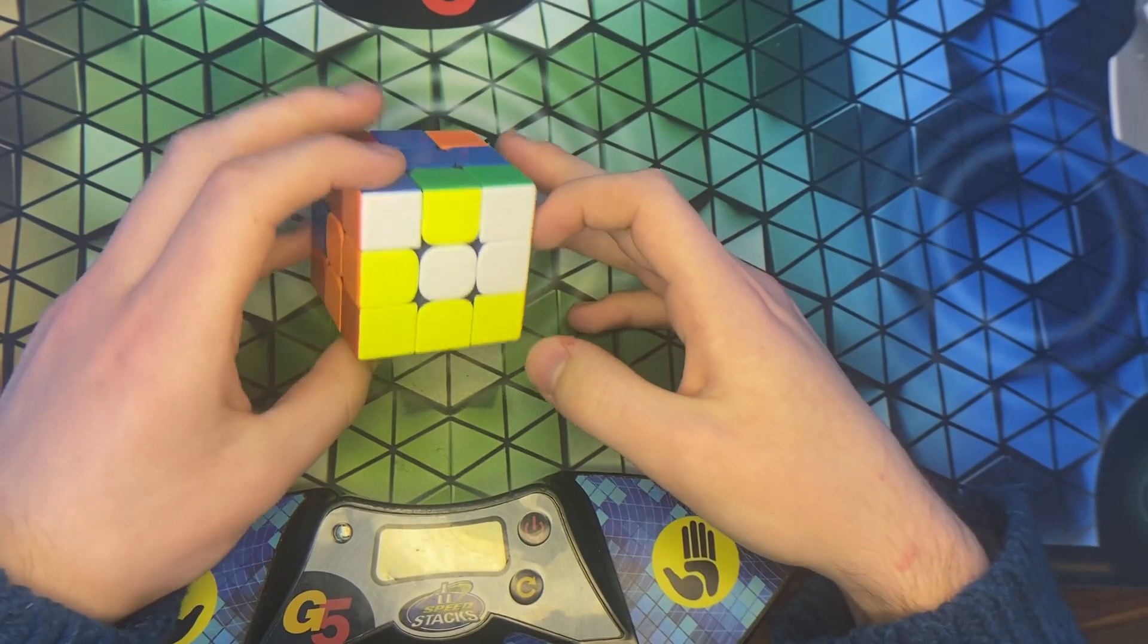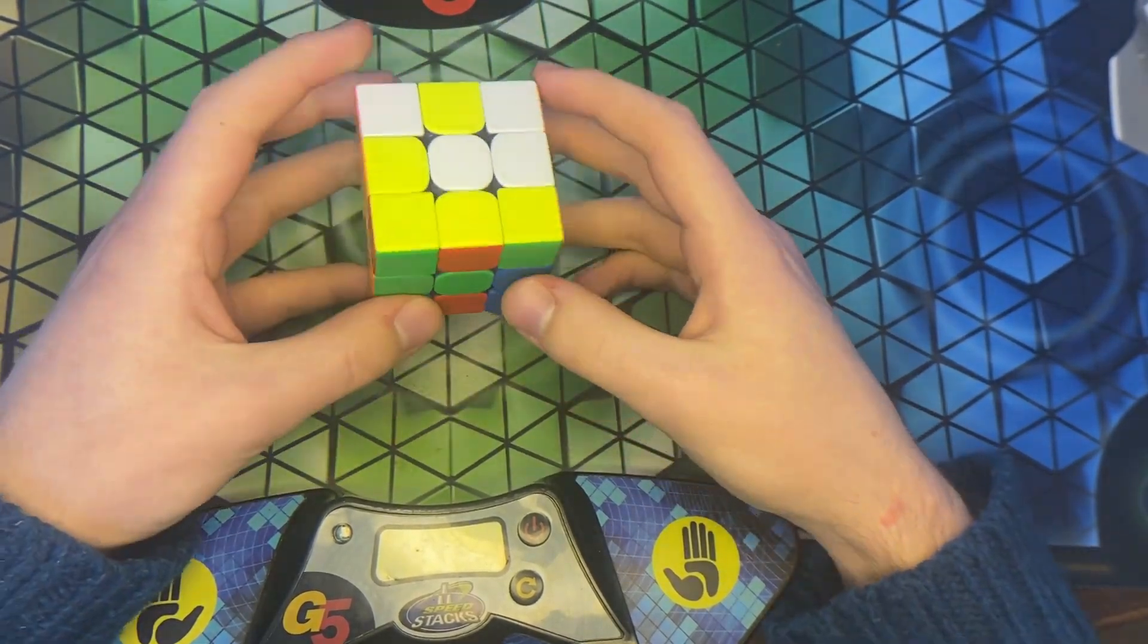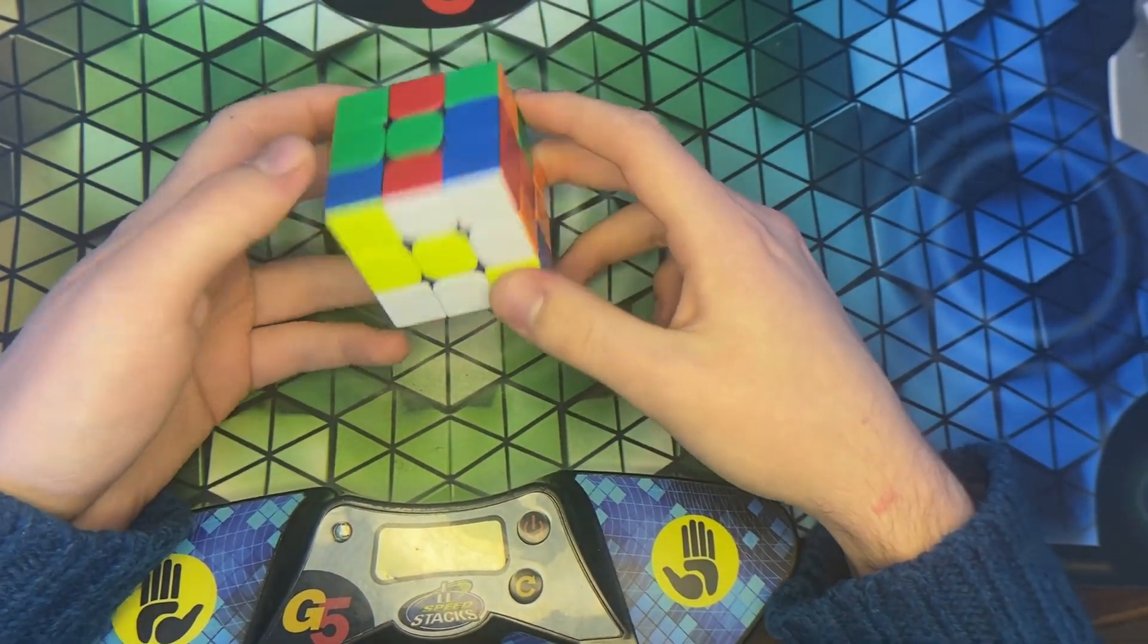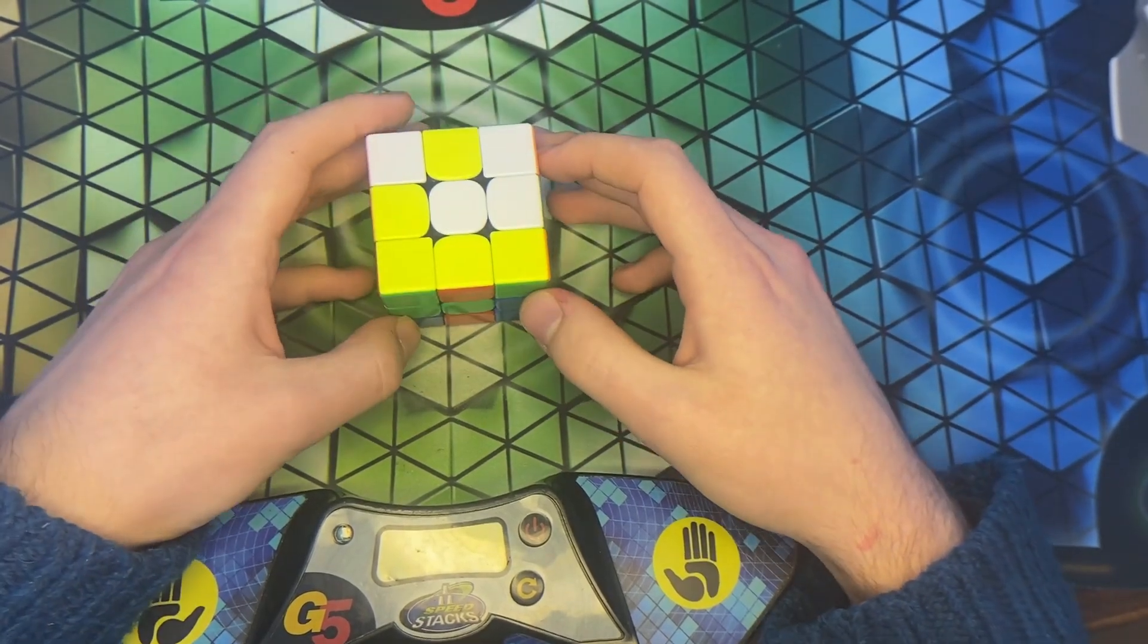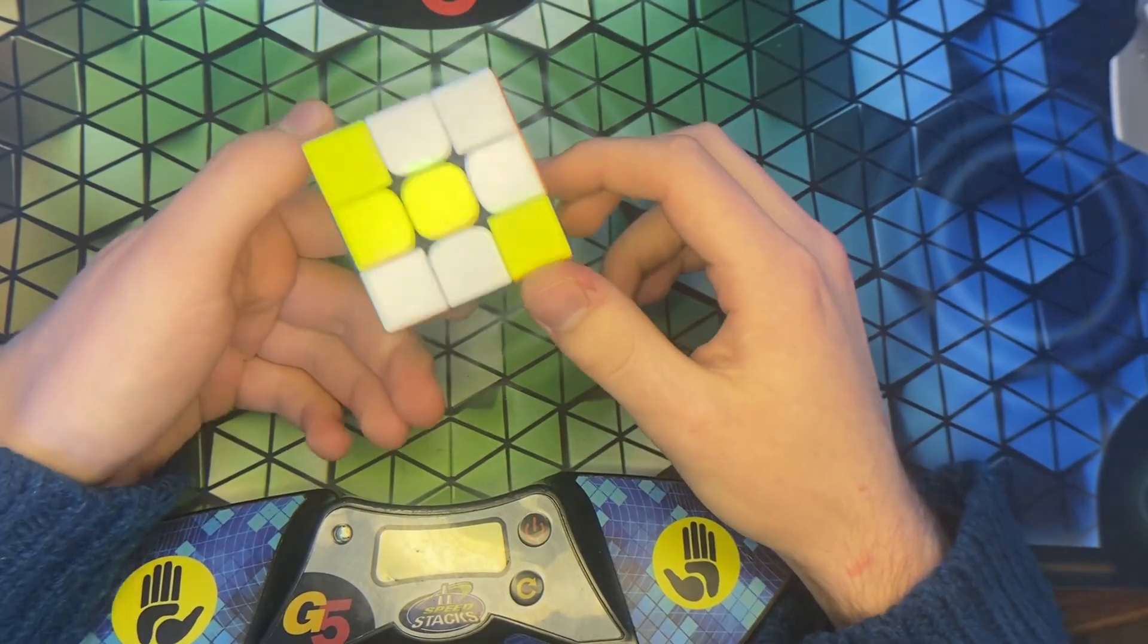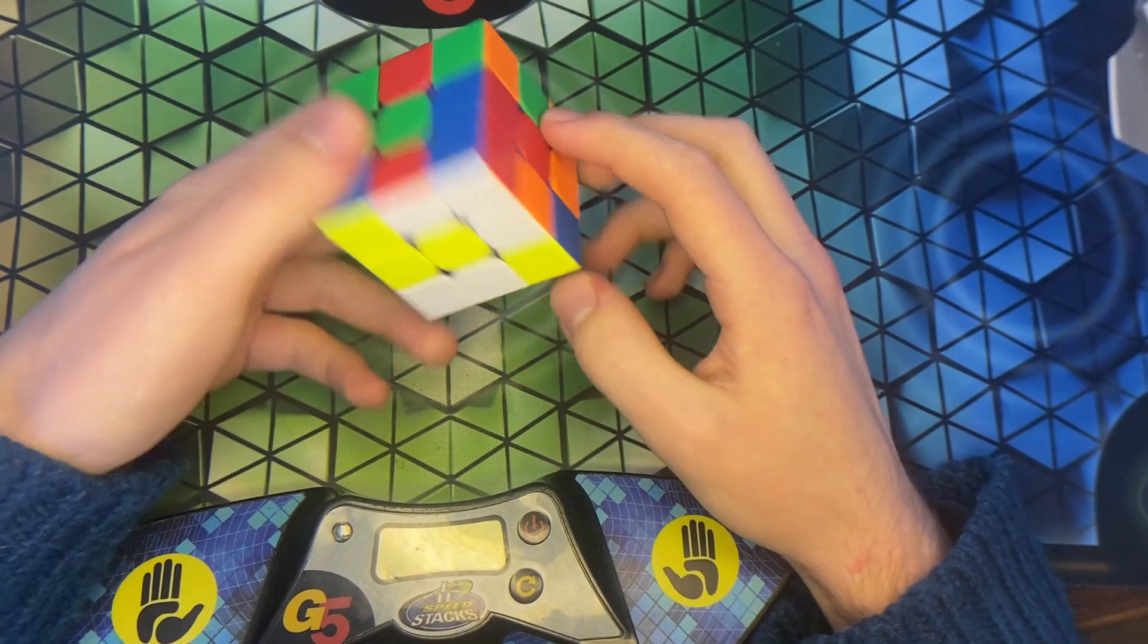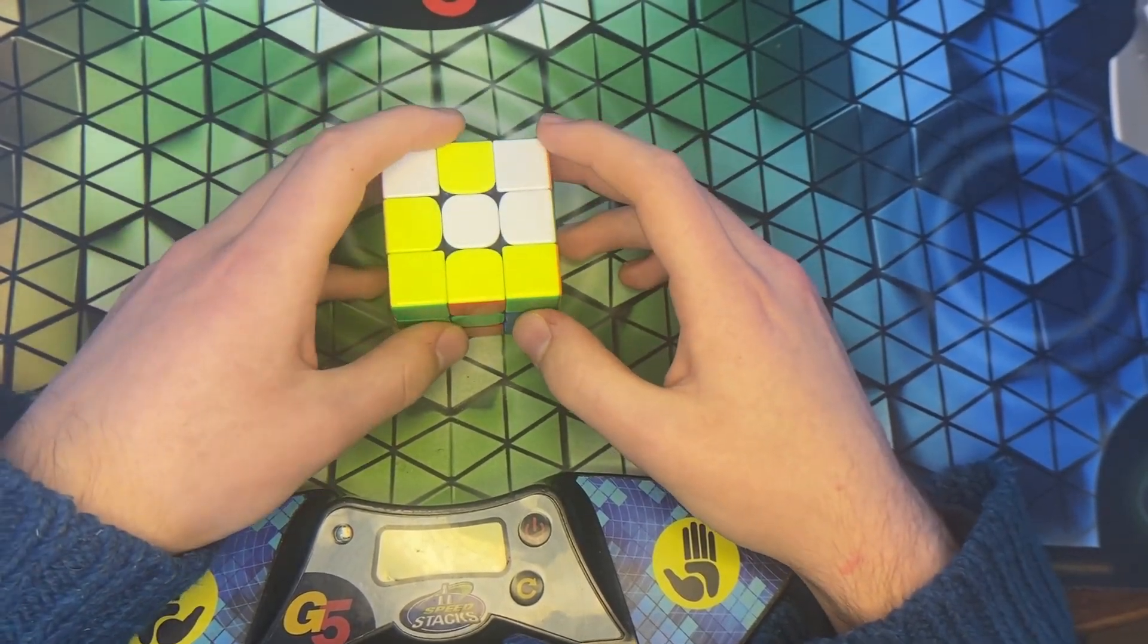So, this is a domino reduction, which is an FMC method. And in domino reduction, we have just a bunch of different types of corners, and there's a label for each corner. There are 11 different, what is called, subsets of corners. And you can just tell by doing just a little bit of tracing, a little bit of inferring, and you can tell what subset the corners are in.